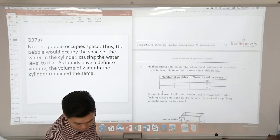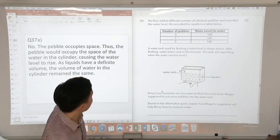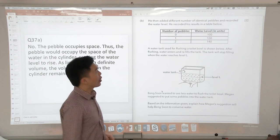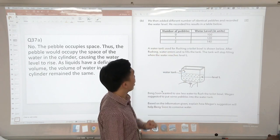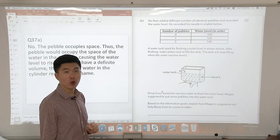Let's look at part B. He then added a different number of identical pebbles and recorded the water level. So he recorded his results in the table below.